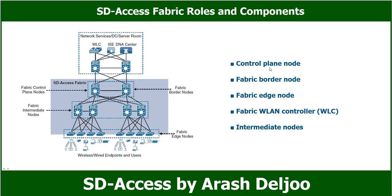The control plane node contains the settings, protocols, and mapping tables to provide the EID-to-RLOC mapping system for the fabric overlay. The fabric border node connects external Layer 3 networks to the SDA fabric. The fabric edge node — access or distribution layer devices — connects wired endpoints to the SDA fabric. The fabric Wireless LAN Controller connects APs and wireless endpoints to the SDA fabric, similar to the fabric edge node but for wireless clients. Intermediate nodes are intermediate routers or extended switches that provide only underlay services — overlay tunnels pass through them but they have no awareness of the overlay.